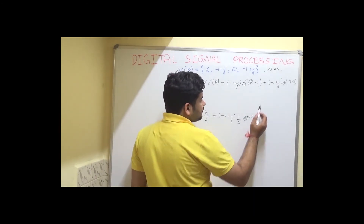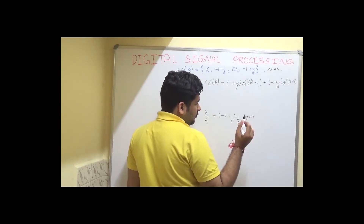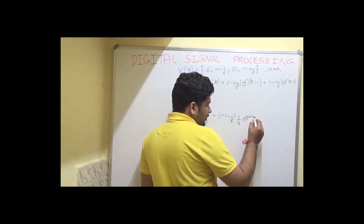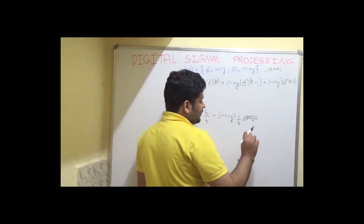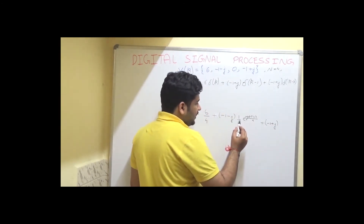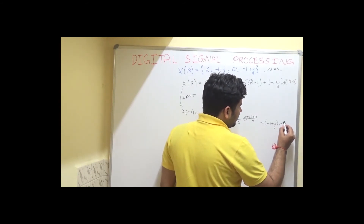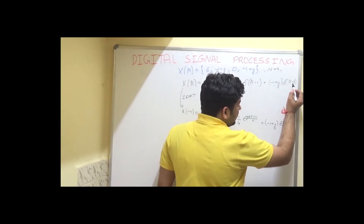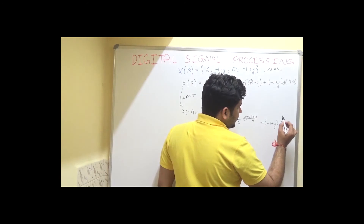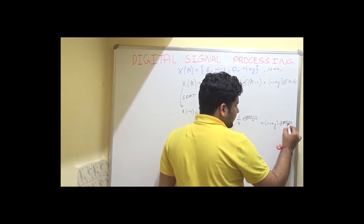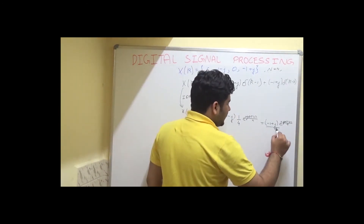Here j 2 pi, k₀ is 1, so I write 1, and this expression is in the time domain so I write small n divided by capital N which is 4. Plus, on the same lines, (minus 1 plus j) times e raised to the power j 2 pi times (3 · n / 4), since k₀ is 3 here, divided by capital N which is 4.